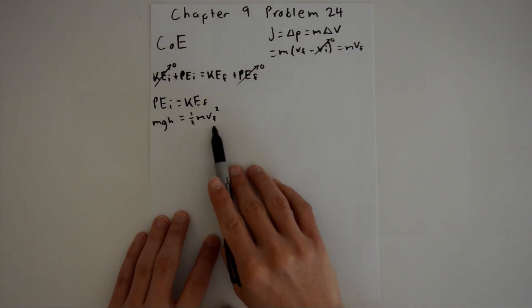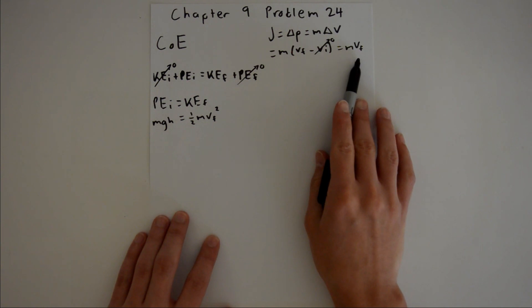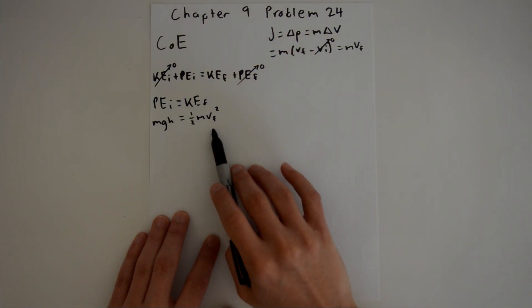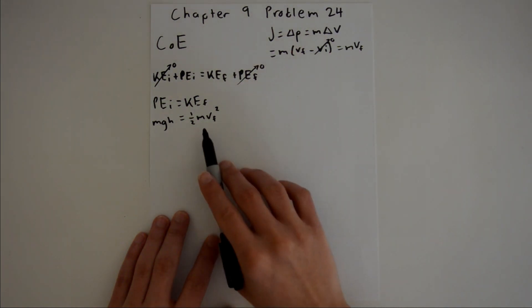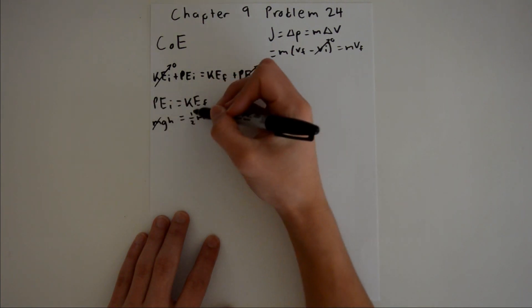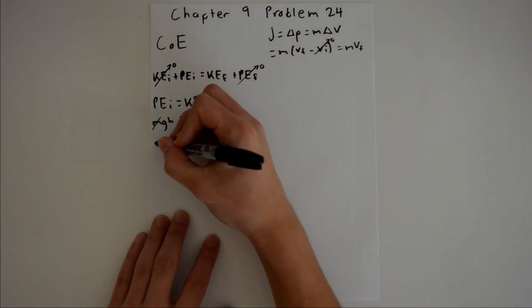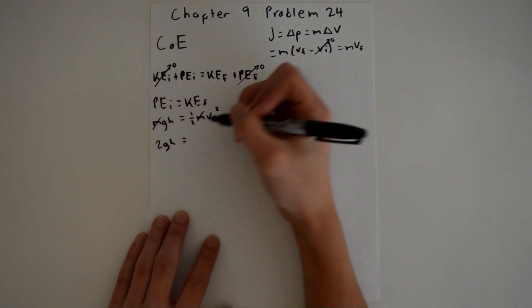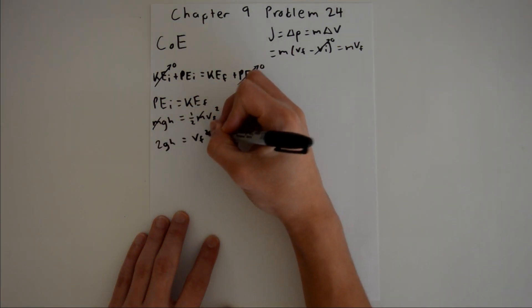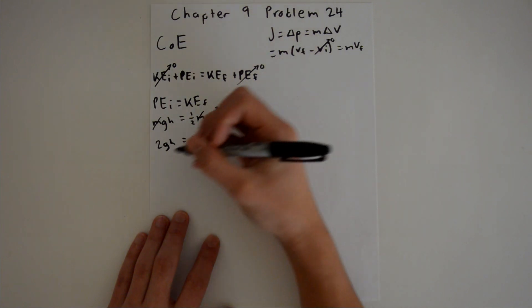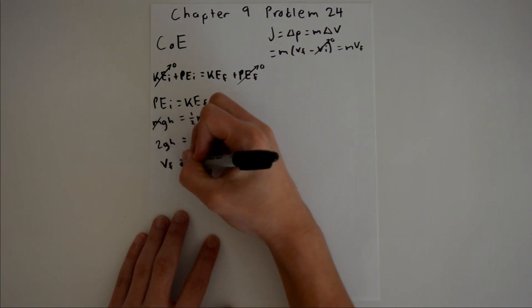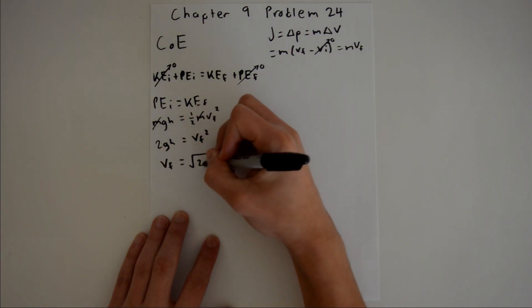Now we see our final velocity here is what we need to solve for, so all we have to do is solve for the final velocity. As you can also see there is mass on both sides, so we can cross those out. We can multiply by two on either side, so we get 2gh is equal to vf squared, and all we have to do is square root either side, so vf is going to be equal to the square root of 2gh.